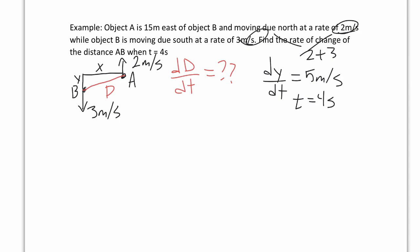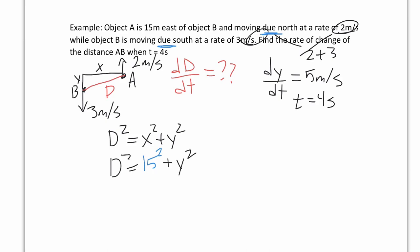Our good friend Pythagoras helps us here. D² = x² + y². However, neither A nor B is moving left or right — they're moving due north and due south — so the horizontal separation is always 15 and doesn't change. We write it as 15² rather than as a variable. The distance D and the vertical distance y are both changing, so we leave those as variables.